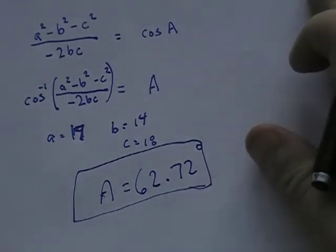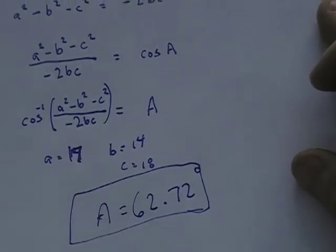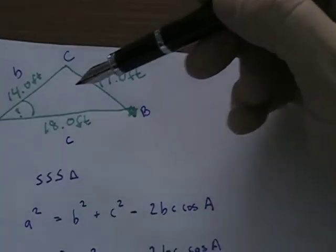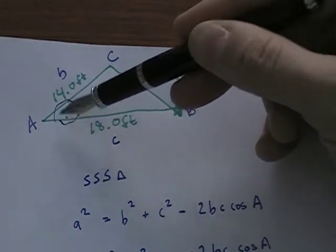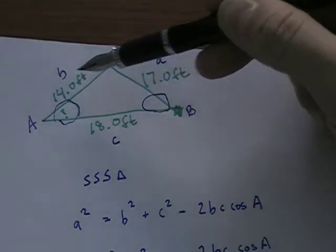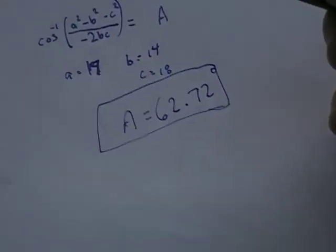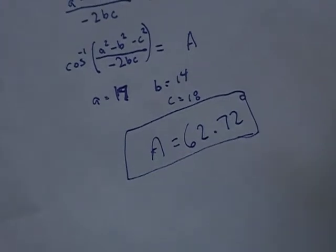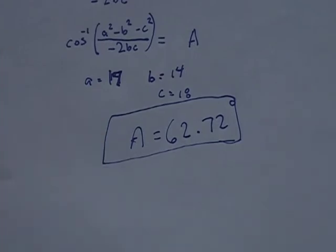And just to make sure, I always like to go back and look at my answer to see if it makes sense to me. When I go back up here and I look, I don't have any angles to compare this to, but let's say I was asked to solve for all three angles. This guy's 62.72, it's across from the 17 foot side. If I solve for this angle, it's across from the 14 foot side, it should be smaller than the answer I just got. So if you had to solve for all three angles, you'd want to compare them and see that they seemed like they were in the right ballpark. But anyway, this is the answer for that question, just asked to solve for angle A. And if you have any questions about how to use the law of cosines, please let me know.